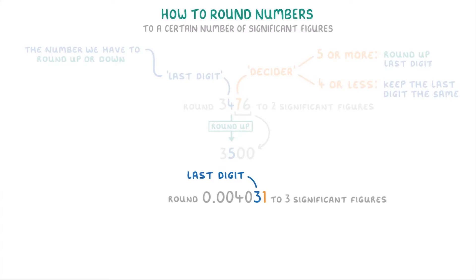Next we look at the number on the right, which is our decider. And because it's a one, which counts as being four or less, it tells us we're going to have to keep the last digit the same. So we keep our last digit as a three and the decider becomes a zero. However, whenever we round decimals like this, we actually don't keep any zeros at the end of the number. So we'd get rid of it and end up with 0.00403.